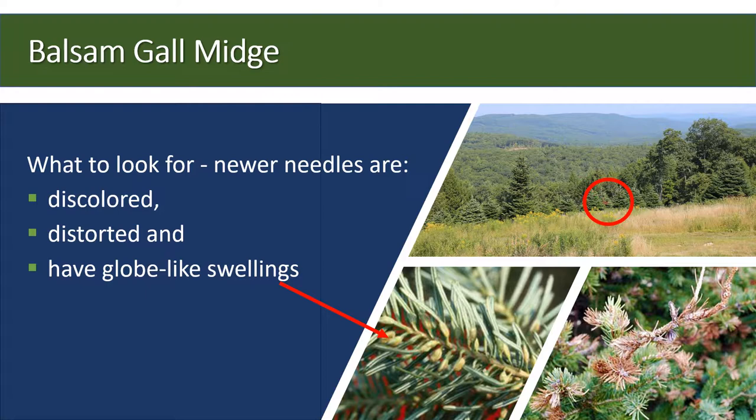Let's imagine being in a plantation. As you scan the trees, you notice one of the balsam fir trees showing discolored needles. Some of the newer needles are discolored, distorted, and have globe-like swellings near the base of them. This type of damage is caused by a small fly.